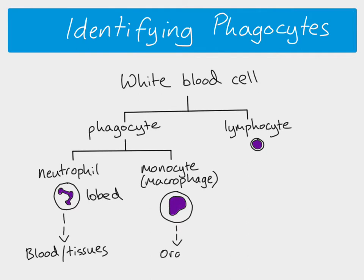Macrophages tend to stay in the organs, patrolling areas such as the alveoli, and you also find a lot of them in the lymph nodes. They tend to stay more in one place rather than moving around as neutrophils do.